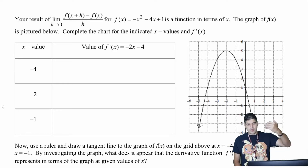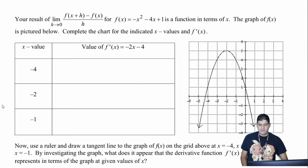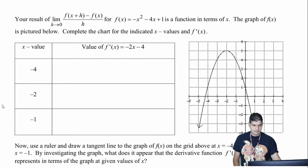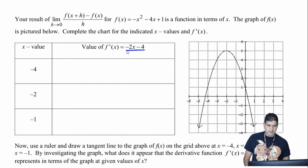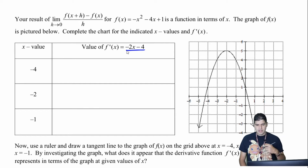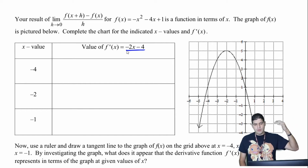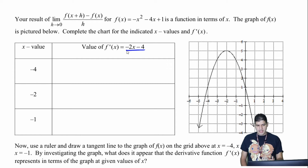So we have our result from our previous problem, where f of x is negative x squared minus 4x plus 1, and we know that f prime of x comes out to be negative 2x minus 4. So we have the graph right here, and we want to complete the chart for the indicated x values and f prime of x.